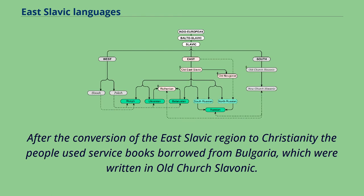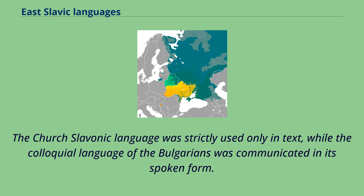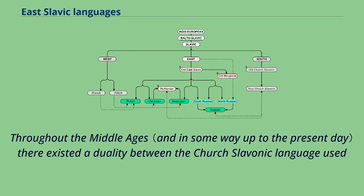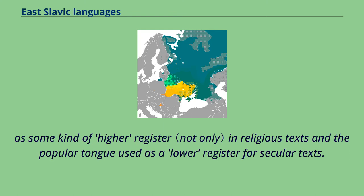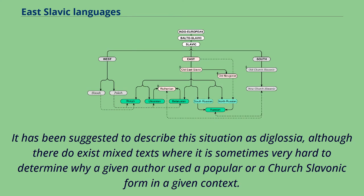After the conversion of the East Slavic region to Christianity, the people used service books borrowed from Bulgaria, which were written in Old Church Slavonic. The Church Slavonic language was strictly used only in text, while the colloquial language of the Bulgarians was communicated in its spoken form. Throughout the Middle Ages there existed a duality between the Church Slavonic language used as a kind of higher register in religious texts and the popular tongue used as a lower register for secular texts. It has been suggested to describe this situation as diglossia, although there do exist mixed texts where it is sometimes very hard to determine why a given author used a popular or a Church Slavonic form in a given context.